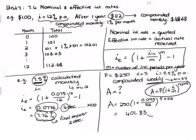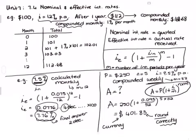A few important things for your final answer: always round to two decimal places, and round correctly — don't just truncate at the second decimal. Also, always include your currency. We don't include currency units in our calculations, but when you write the final answer you must show that you know it is dollars.